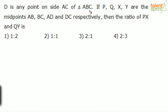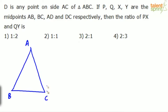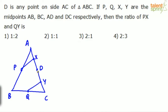Second problem: D is any point on side AC of triangle ABC. P, Q, X, Y are the midpoints of AB, BC, AD, and DC respectively. So P is the midpoint of AB, Q is the midpoint of BC, X is the midpoint of AD, and Y is the midpoint of DC. We need to find the ratio of PX to QY. Let's also connect B and D.